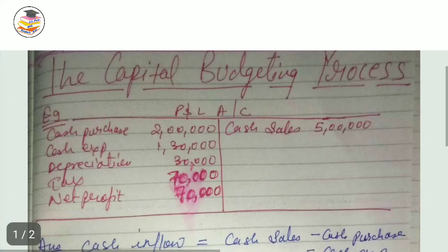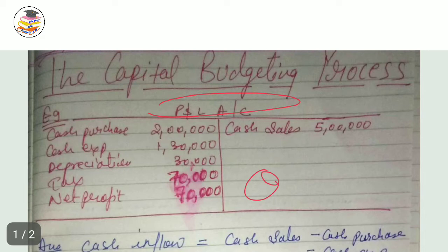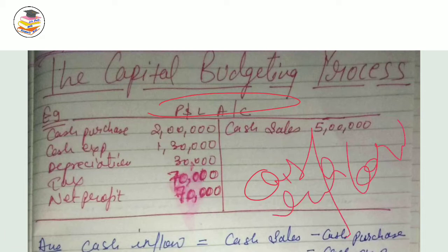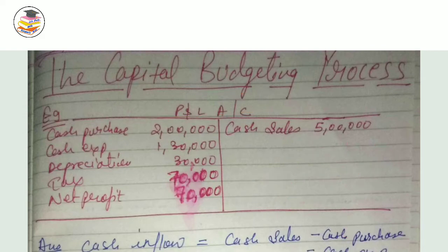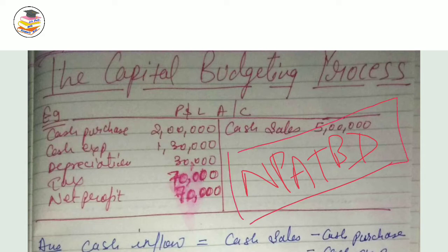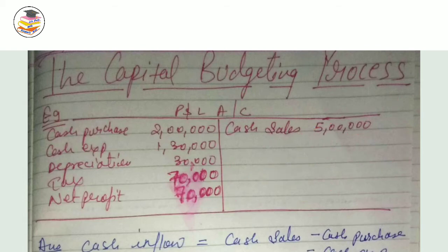Let's start. In this question you have a profit and loss account. Now, what do we call cash inflow? Cash inflow is net profit after tax and before depreciation. So net profit after tax and before depreciation is your cash inflow. You have cash sales given, you have inflows, means you have money coming in, so you take net inflow.